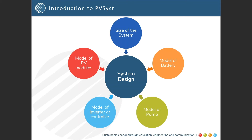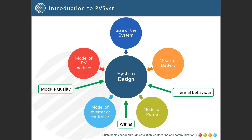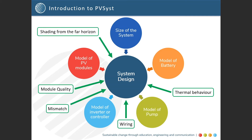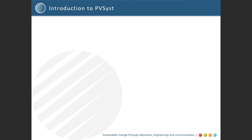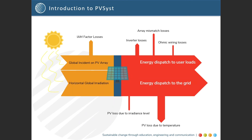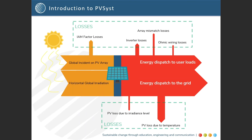You can also define additional, more detailed parameters and find effects like thermal behaviour, wiring, module quality, mismatch, and shading from the far horizon or partial shadings of the near objects on the PV array. The results of the project design tool include numerous simulation variables, which may be displayed in monthly, daily or hourly values and can even be transferred to other software. A primary feature in the output results is the loss diagram, which is useful in identifying the weaknesses of the system design.